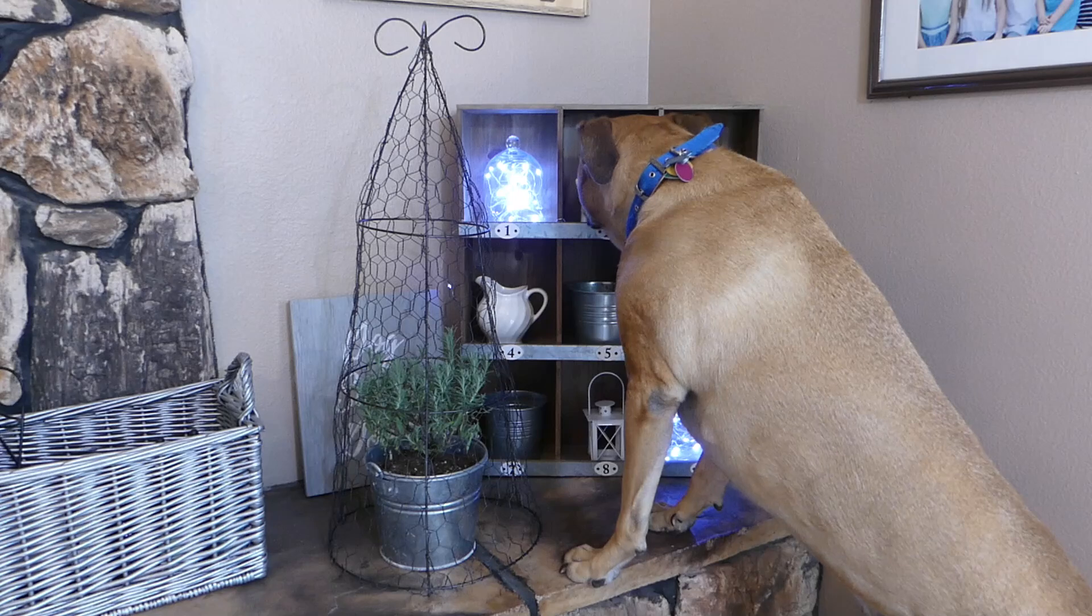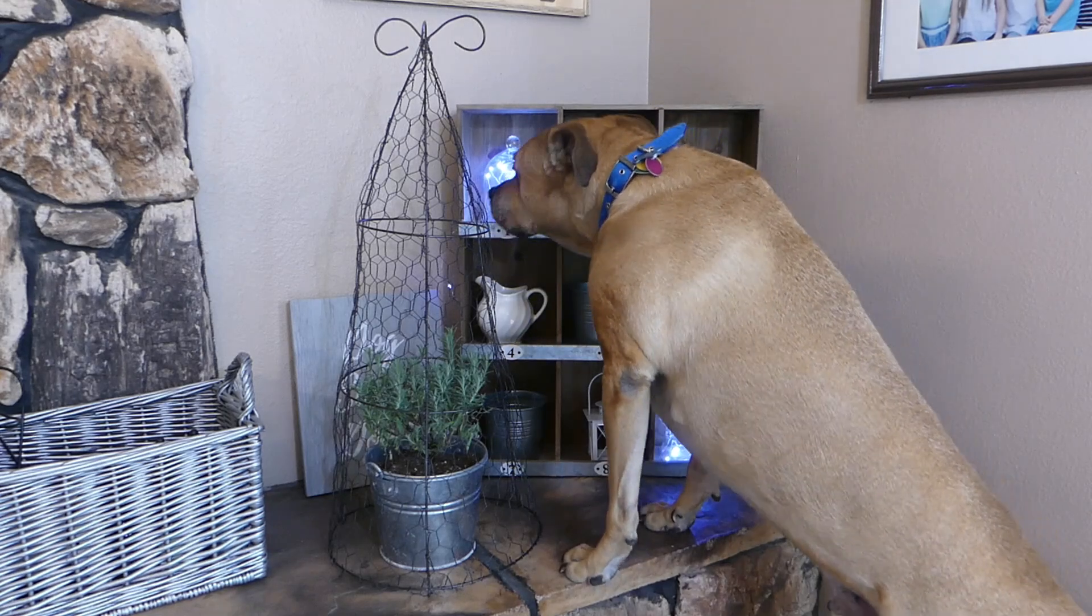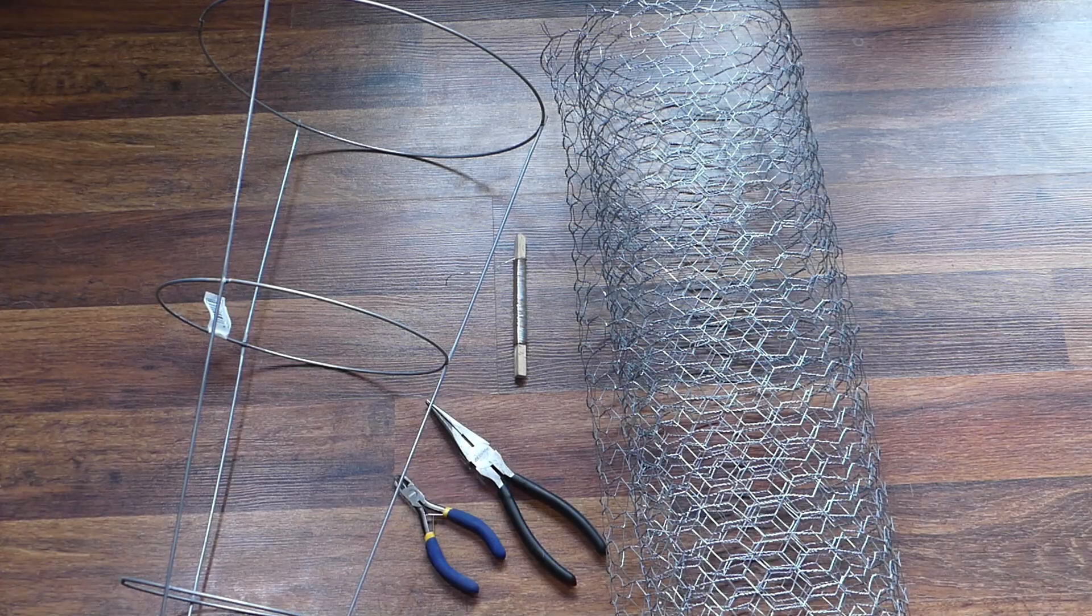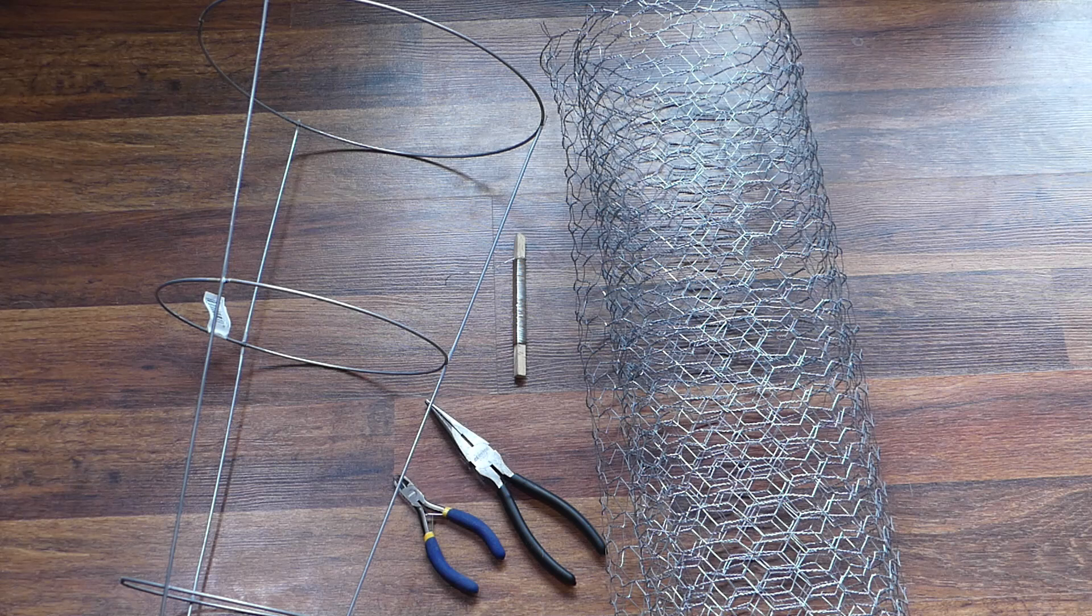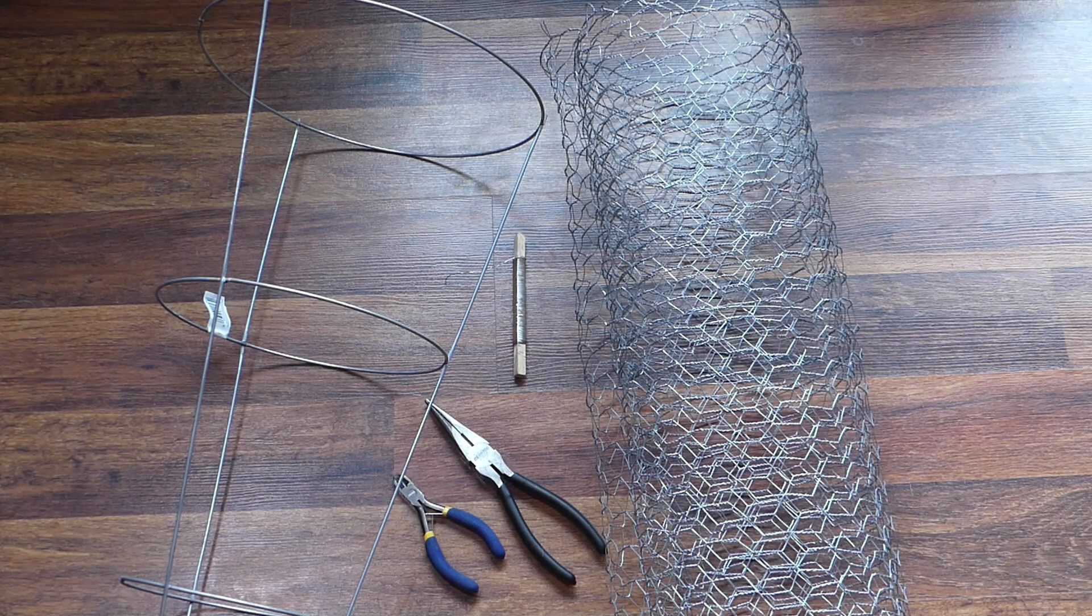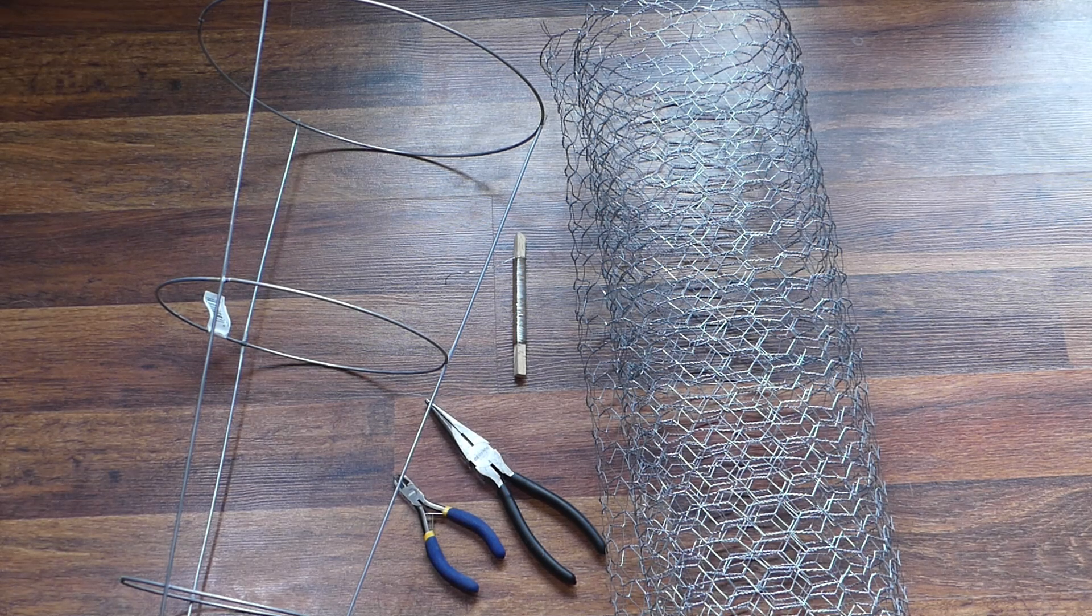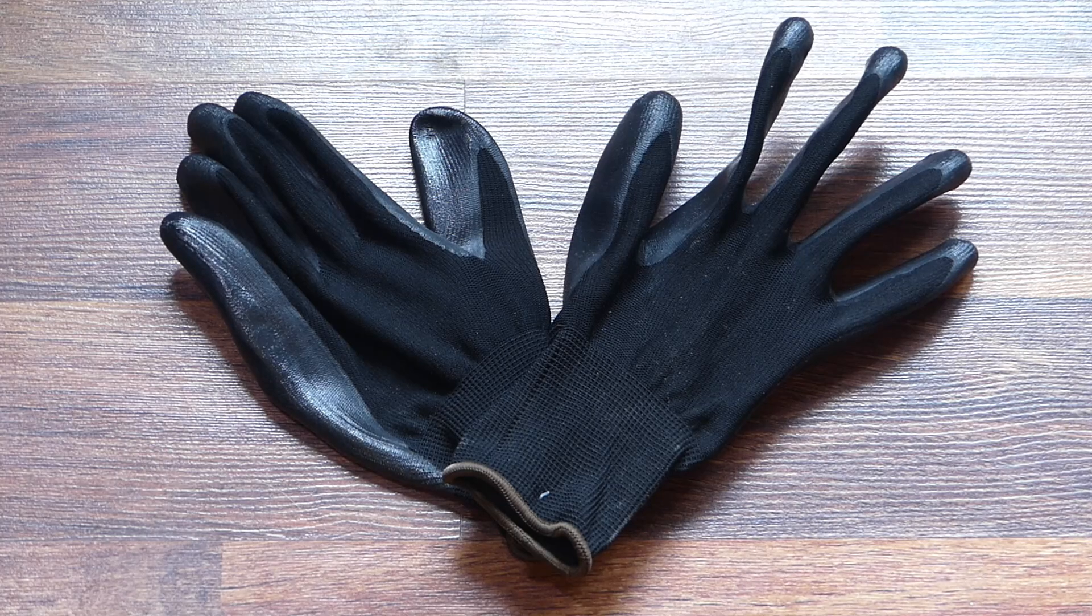Make a farmhouse style version with a tomato cage and chicken wire. You'll need a wire tomato cage, chicken wire, additional wire for wrapping, wire snips, needle nose pliers, and work gloves if you don't want to get small scrapes from the chicken wire.